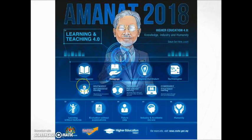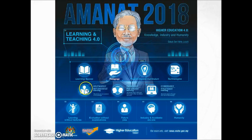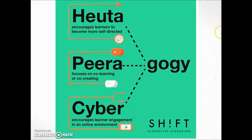People keep on asking what is Heutagogy, Paragogy or Pyragogy, and Cybergogy. For today's presentation, I would like to emphasize more on these at surface level. Heutagogy encourages learners to become more self-directed; Pyra, from peer, focuses on co-learning or co-creating; and Cybergogy encourages learner engagement in an online environment.